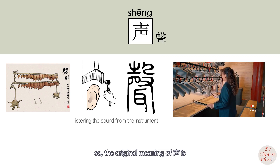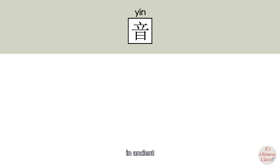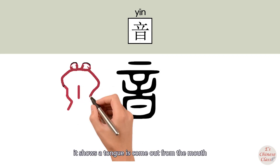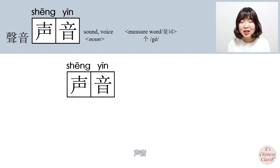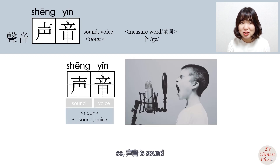The original meaning of SHEN is sound, voice. In Asian, IN was written to show that sound comes out from the mouth. So IN means sound. 声音 — SHEN means sound, IN means voice, so SHEN IN means sound.